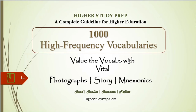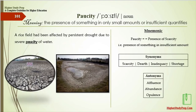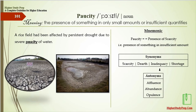Paucity means the presence of something in only small amounts or insufficient quantities. Paucity: presence of a scarcity, that is presence of something in insufficient amount. A rice field had been affected by persistent drought due to the severe paucity of water. The synonyms of paucity are scarcity, dearth, inadequacy, or shortage. The antonyms are affluence, abundance, or opulence.